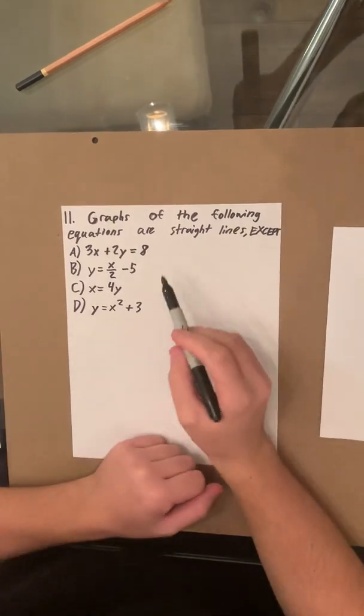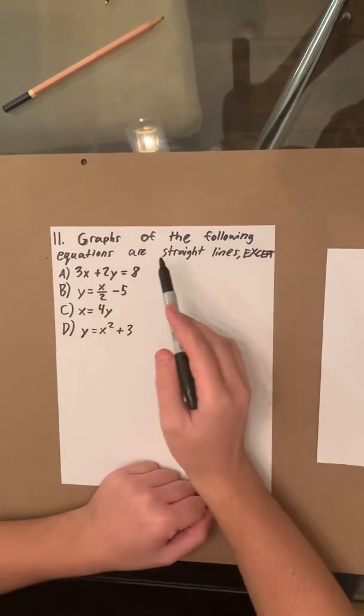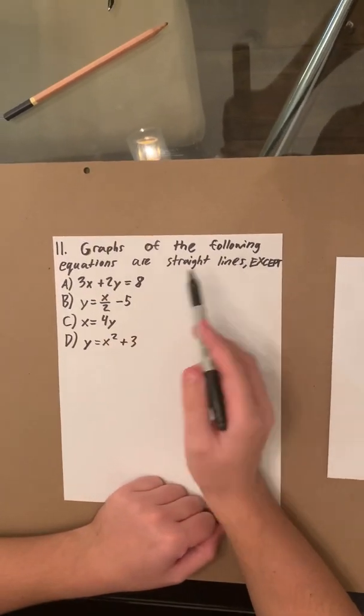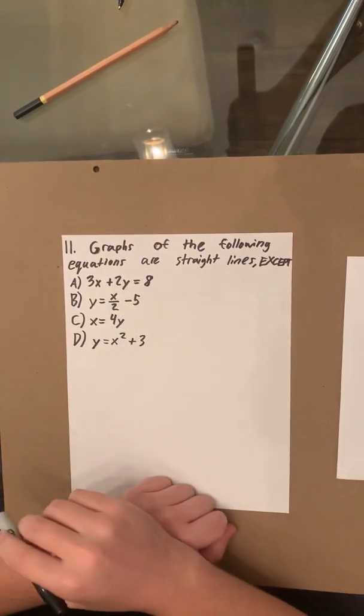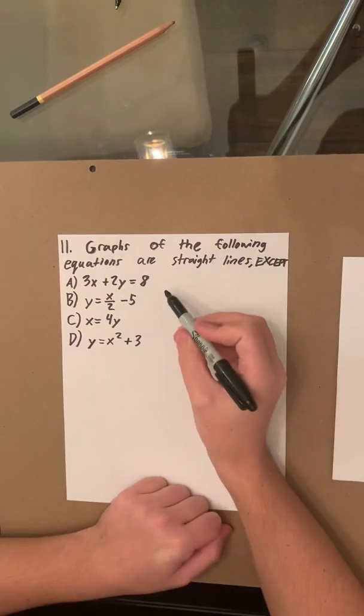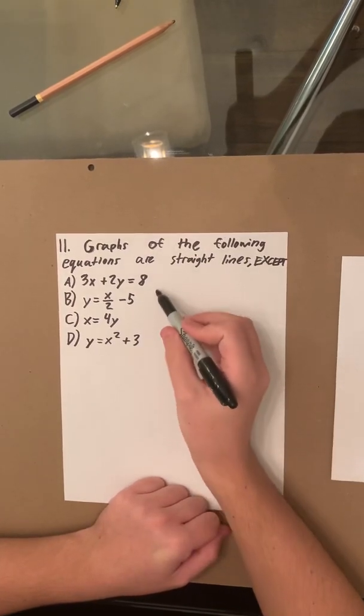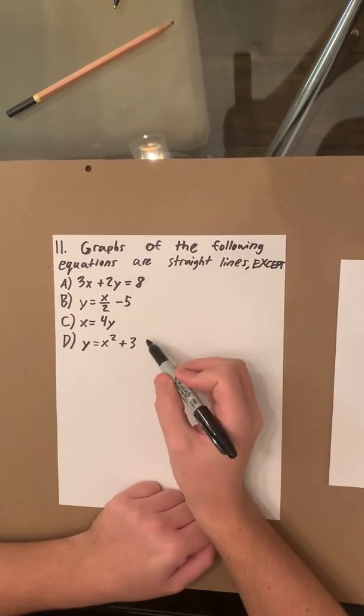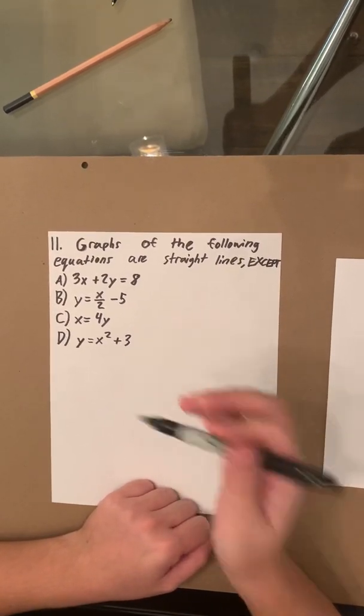For number 11, it says graphs of the following equations are straight lines except. So you're looking for the one equation here that will not be a straight line.